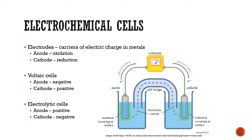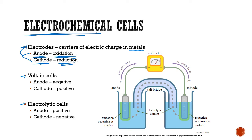For all electrochemical cells — both voltaic and electrolytic — oxidation is always going to happen at the anode, and reduction is always going to happen at the cathode. Anodes and cathodes are both electrodes, and these are pieces of metal that carry electric charge. Always: the anode is where oxidation occurs, the cathode is where reduction occurs. How to remember? CROA — our mnemonic device: cathode is reduction, oxidation happens on the anode.